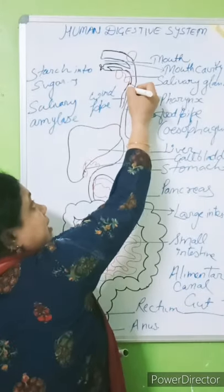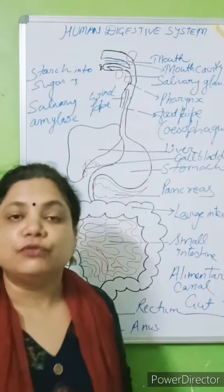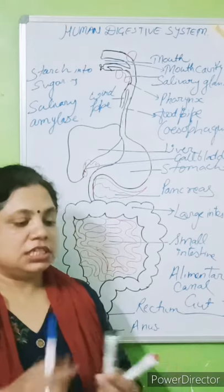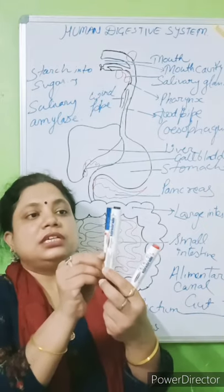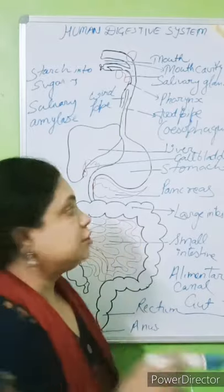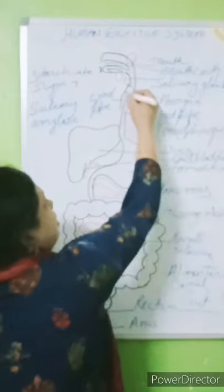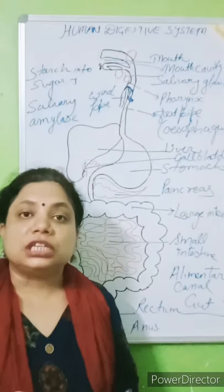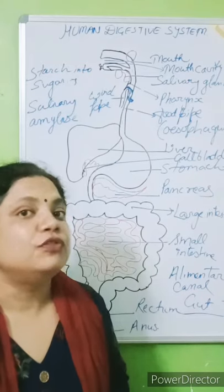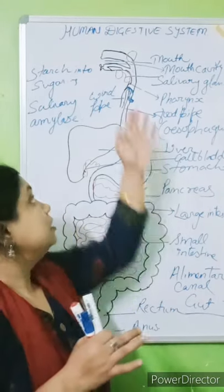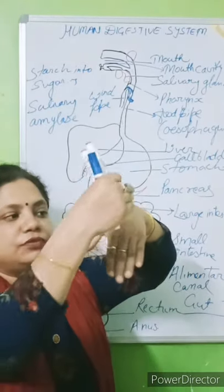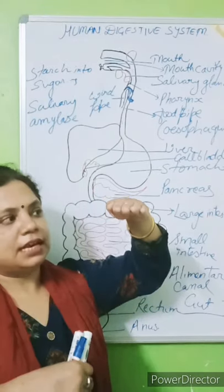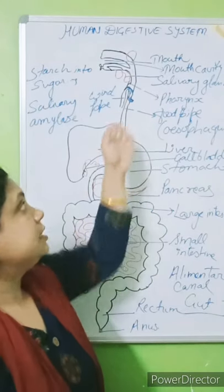Through the pharynx, the food enters into the esophagus, which is known as the food pipe. The food pipe is present behind the windpipe. In the esophagus, the epiglottis is present. The function of the epiglottis is to direct the food into the food pipe and prevent it from going into the windpipe. When food comes, the epiglottis turns and the food enters into the esophagus.